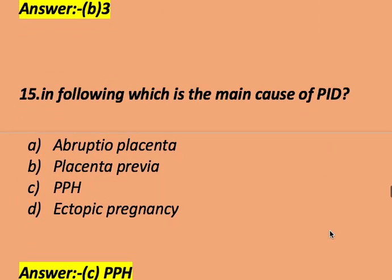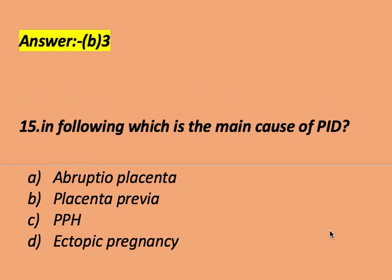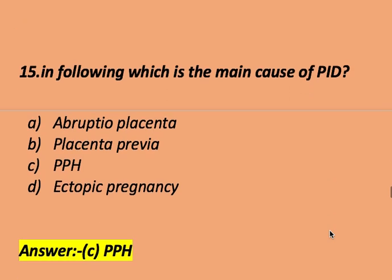The following is the main cause of PID or pelvic inflammatory disease. Options include postpartum hemorrhage and ectopic pregnancy. The right answer is PPH or postpartum hemorrhage. The main cause of pelvic inflammatory disease is postpartum hemorrhage.